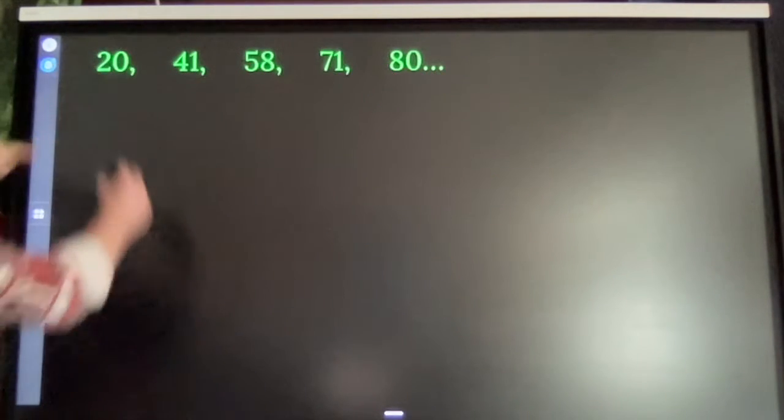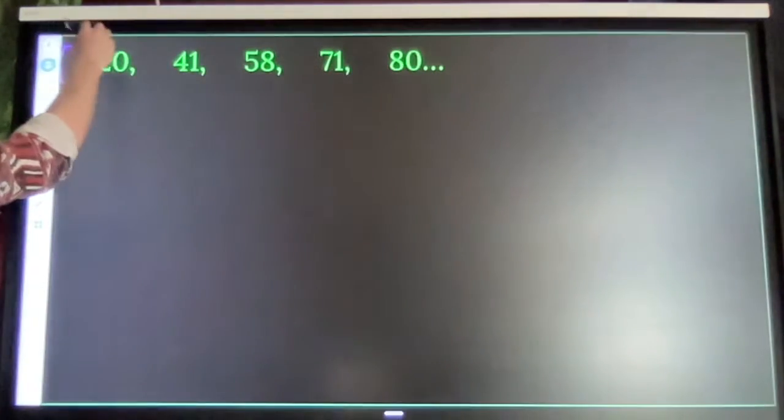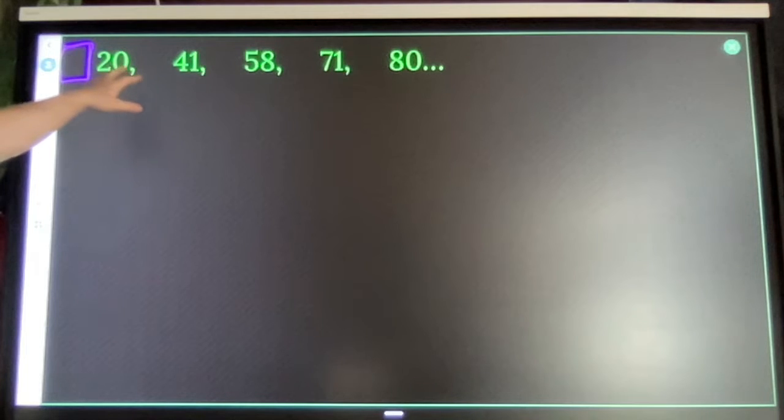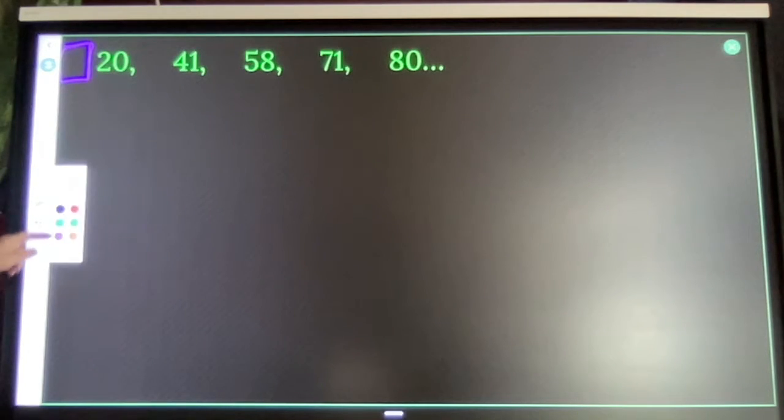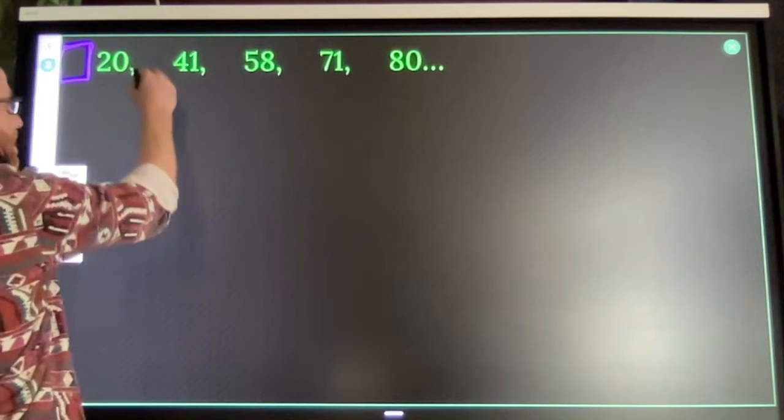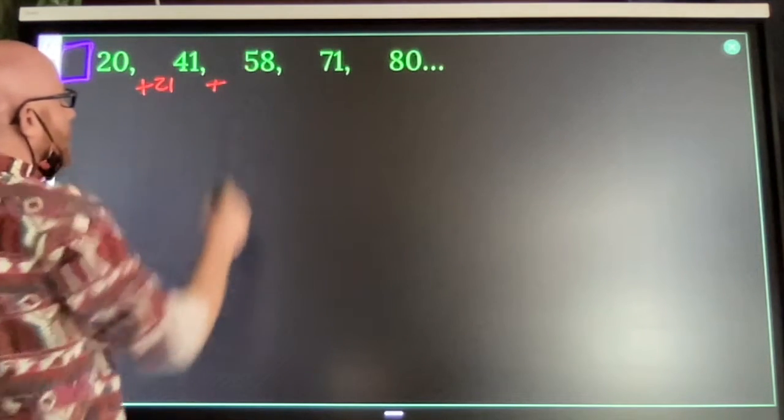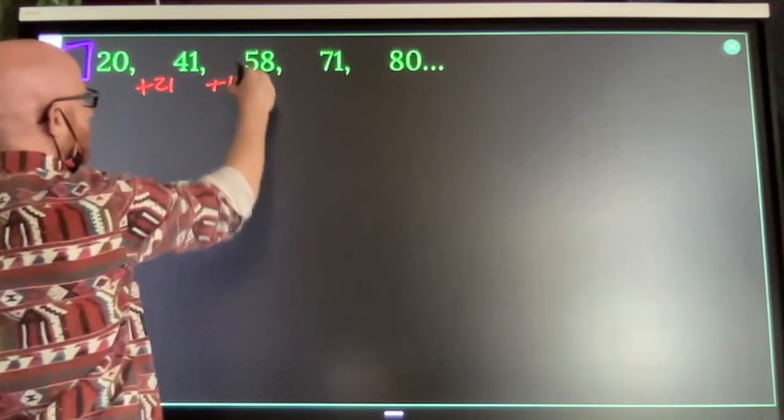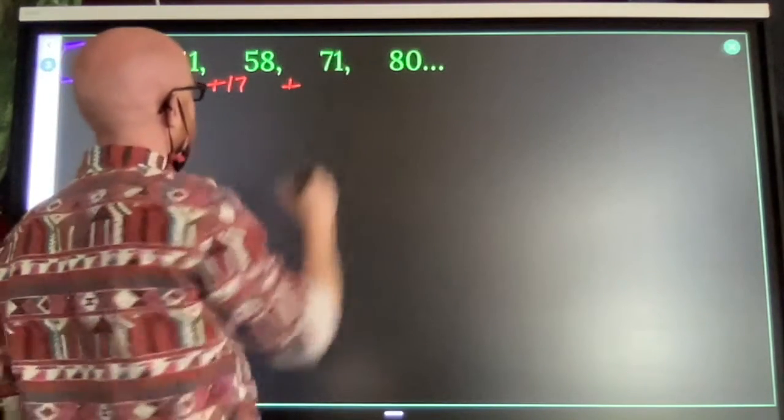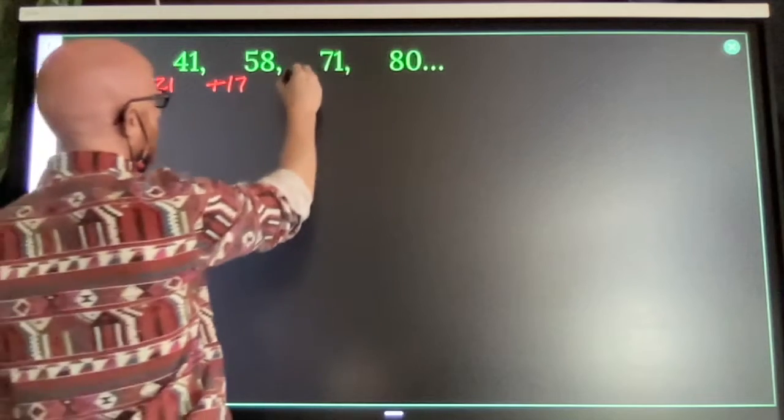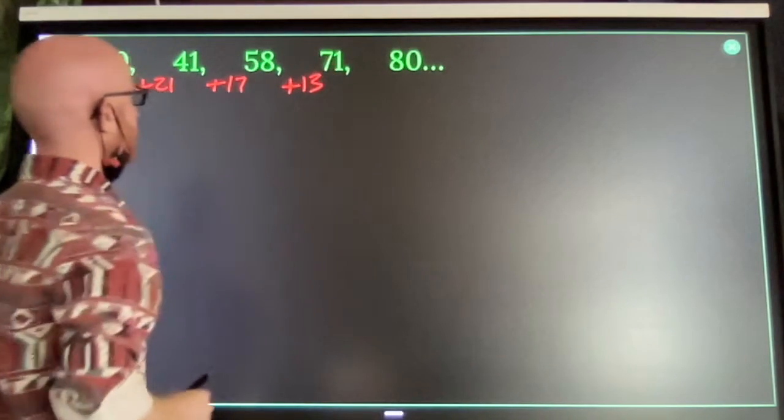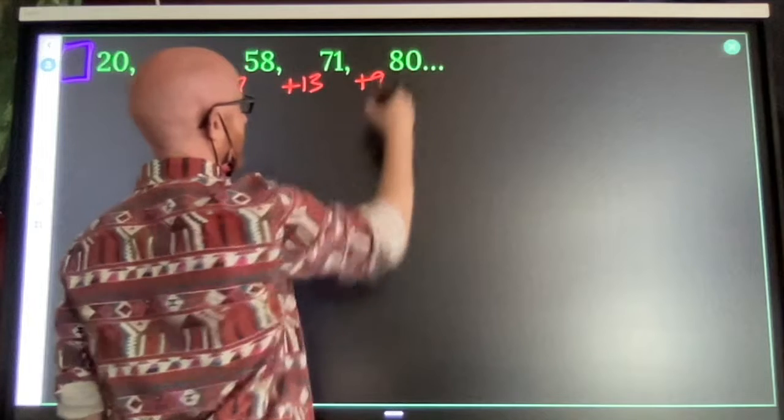So, I want to know what number comes before the 20. In order to do that, I'm going to need to find my differences, my distances. That's plus 21. This is plus 17. This is plus 13, plus 9.